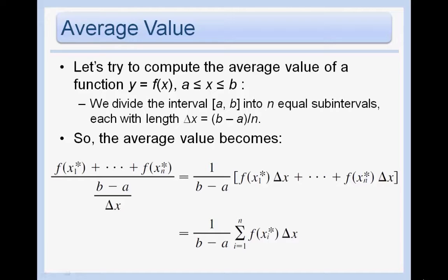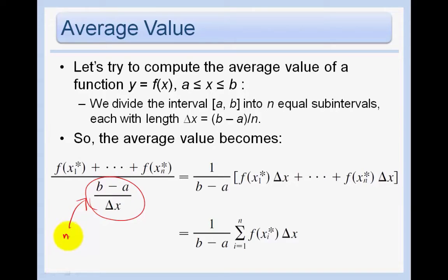In order to do this, we're going to go ahead and just break it into equal subintervals with each width delta x being b minus a over n. That's just our normal delta x. Then the average value becomes: let's add up all the values and divide by b minus a over delta x, which is just the number of subintervals.